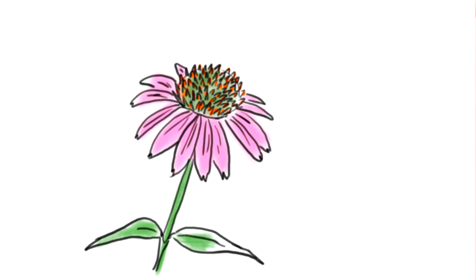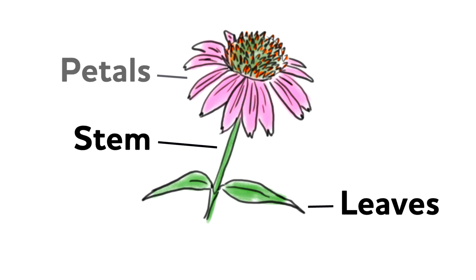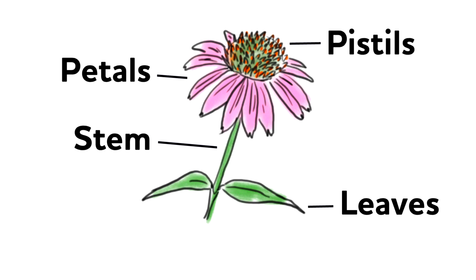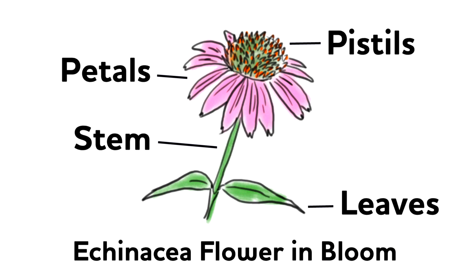Once I was done with all of that, I had a few more things to add. Because this is a scientific drawing and I want people to learn from it, I added a few labels to my drawing so people could identify the different parts of the flower — the stem, the leaves, the petals, and finally the pistils. And then I added a title to my drawing. I called it Echinacea Flower in Bloom.